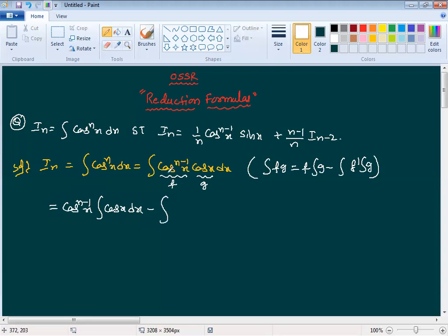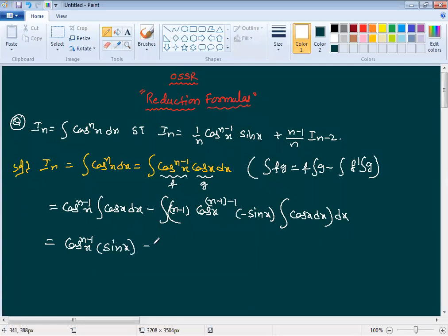Substitute them. F is cos power n minus 1 x into integral g which is cos x dx, minus integral f dash. The derivative of cos power n minus 1 x using the power formula is n minus 1 times cos power n minus 2 x times derivative of cos x, which is minus sin x, times integral cos x dx.